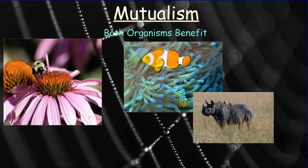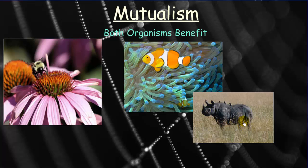The first type is mutualism, a relationship where both organisms receive some benefit. For example, a bee gets nectar from a flower, while the flower uses the bee to carry pollen for pollination. The clownfish gets protection from the sea anemone, while the anemone benefits from the clownfish. Birds pick parasites off a rhino's skin, benefiting the rhino. In mutualism, both organisms benefit from the relationship.